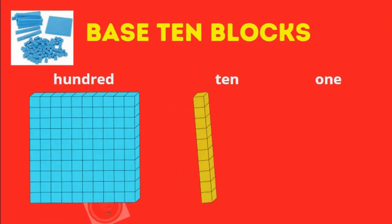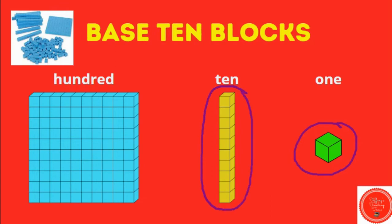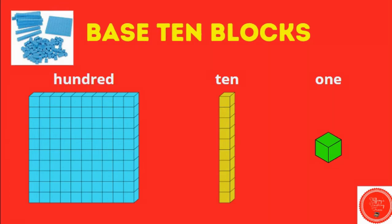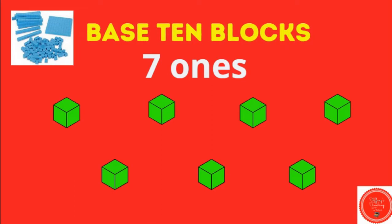Let's look at base ten blocks. We have one. A group of ten looks like this, and this block represents a hundred. When we want to show the number seven with base ten blocks, we need seven ones.